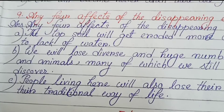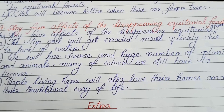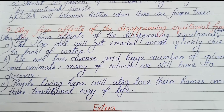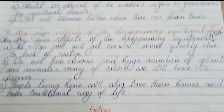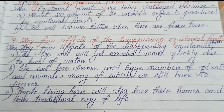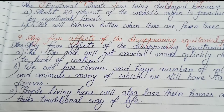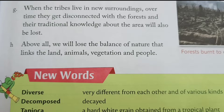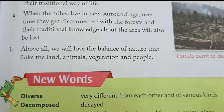Number 9: Any four effects of the disappearing equatorial forest. A — The topsoil will get eroded more quickly due to lack of forest. B — We will lose a diverse and huge number of plants and animals, many of which we still have to discover. C — People living here will also lose their homes and their traditional way of life. D — Above all, we will lose the balance of nature that links the land, animals, vegetation, and people.